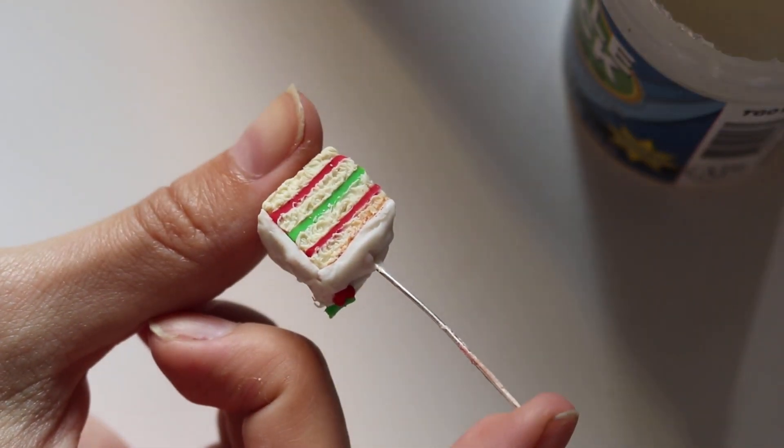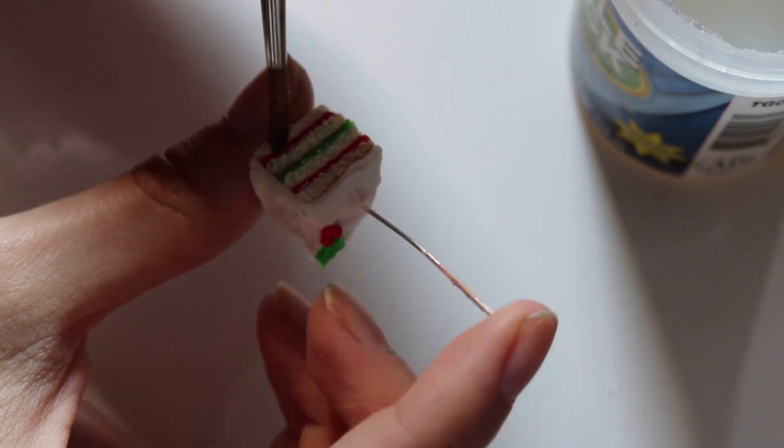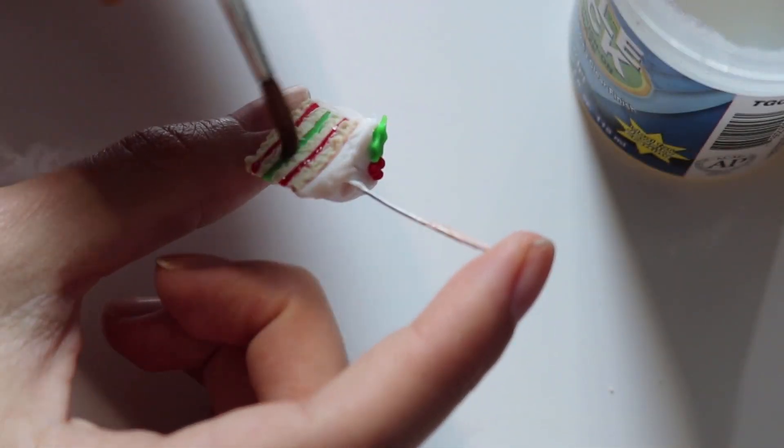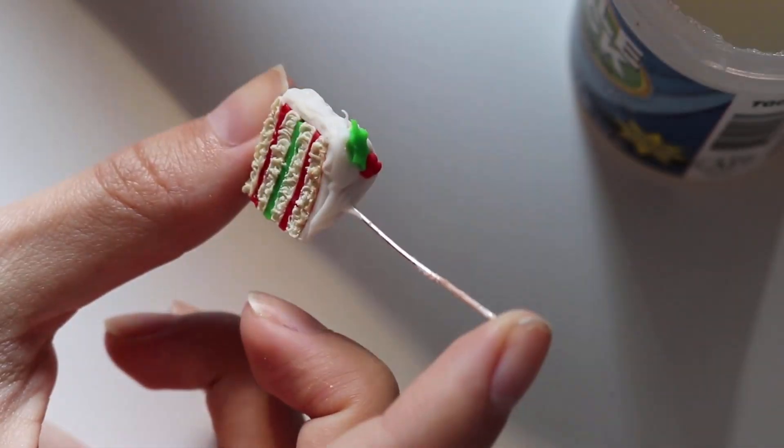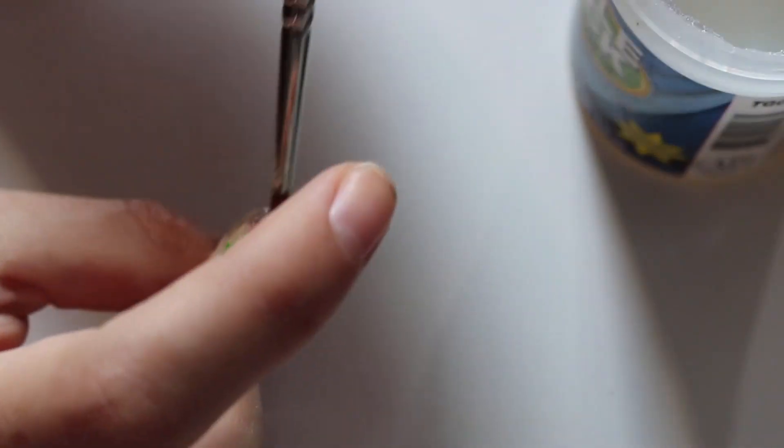And once you're done baking, you'll use any type of gloss that's very glossy, and add that to the icing. So the three little pieces of colored icing inside the cake, and then all on the outside where the icing is, and the holly.